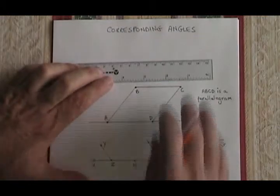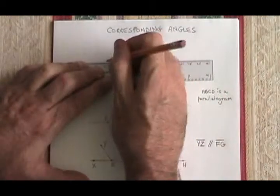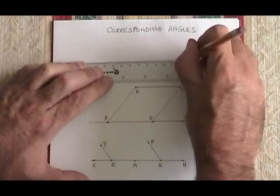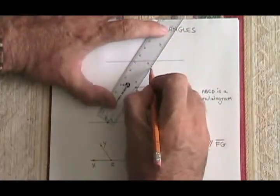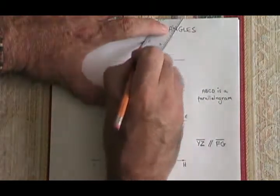Corresponding angles will happen whenever you have a situation like I'm about to draw. We have a straight line and we have two other lines that cross it, but those two lines are parallel.